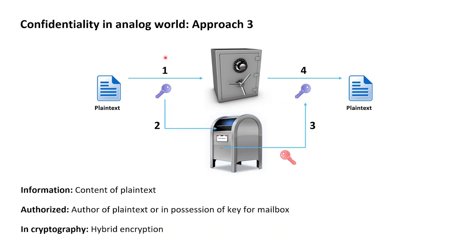Alice then puts the key of the safe into Bob's mailbox and leaves. To retrieve the plaintext, Bob takes his private key of the mailbox, walks up to the mailbox, opens it, and retrieves the key of the safe. With that key, Bob can then open the door of the safe and retrieve the plaintext. Information in this scenario is still just the content of the plaintext. To be authorized means to either be the author of the plaintext or to be in possession of the key for the mailbox.